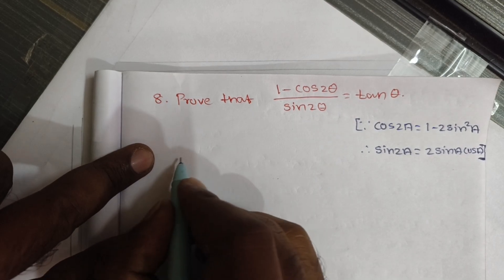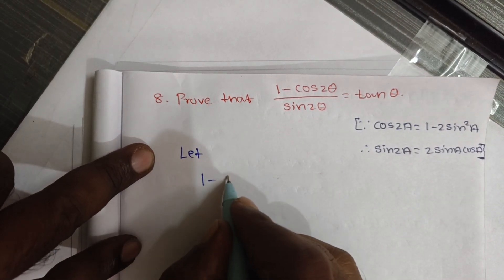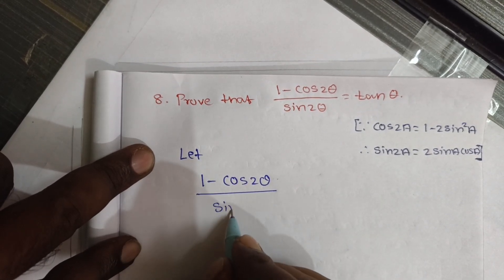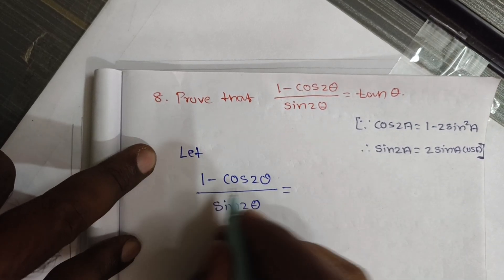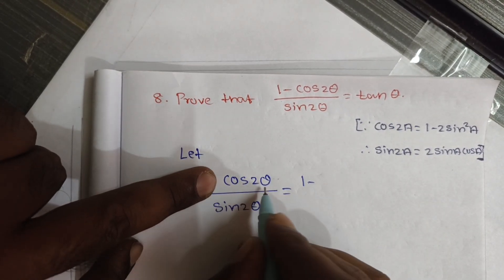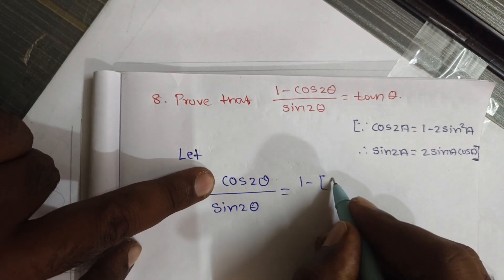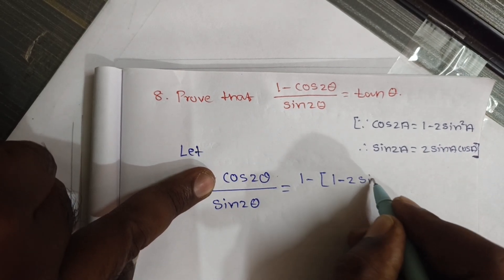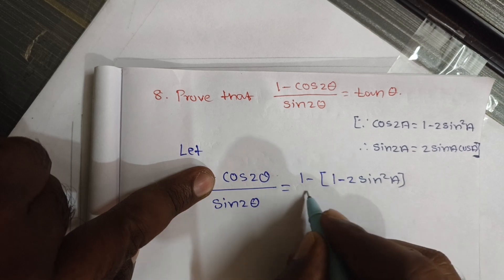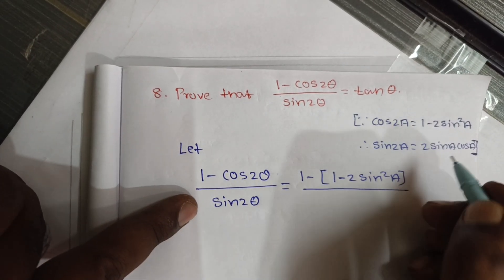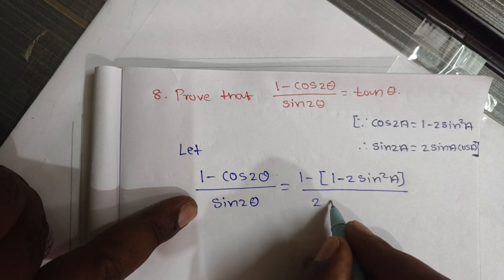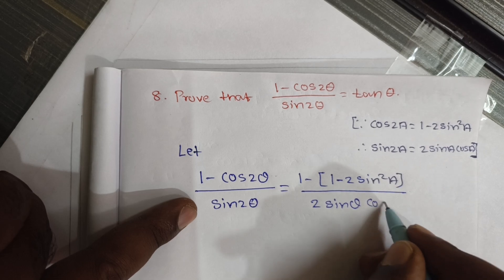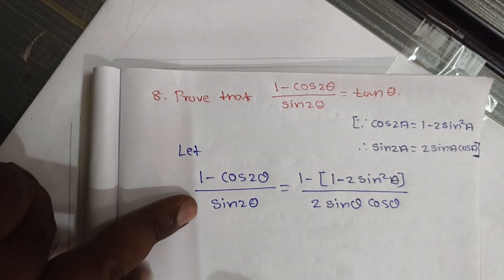So, 1 minus cos 2 theta divided by sin 2 theta. We apply the formula: cos 2 theta equals 1 minus 2 sin squared theta. And sin 2 theta equals 2 sin theta cos theta.